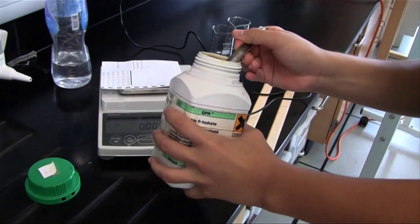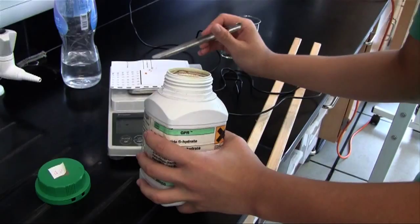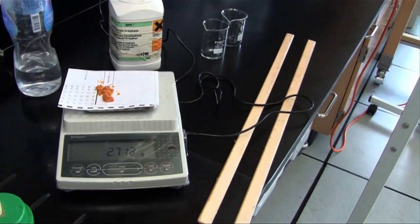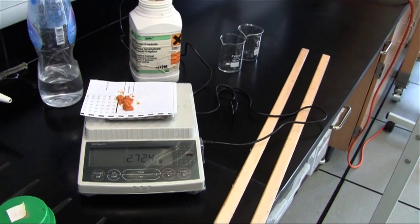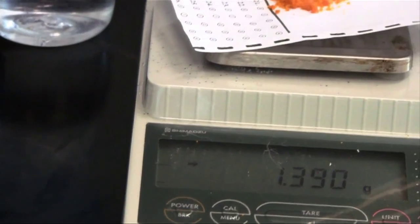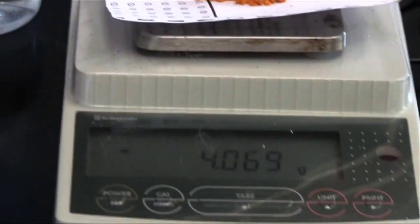The iron 2 chloride and the iron 3 chloride create the response to the magnetic field in the overall fluid. Here we are measuring out four different concentrations of iron 3 chloride.